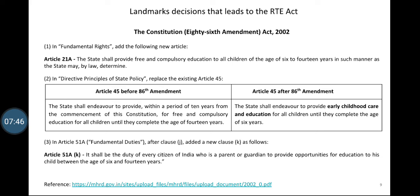There are three major changes that happened due to this amendment. One is that a new sub-clause called Article 21A is added under Article 21, meaning right to education becomes explicitly added into fundamental rights. Article 21A says that the state shall provide free and compulsory education to all children of the age of 6 to 14 years in such manner as the state may by law determine.